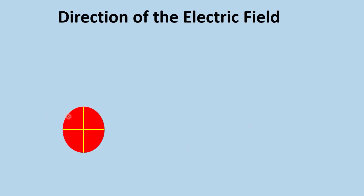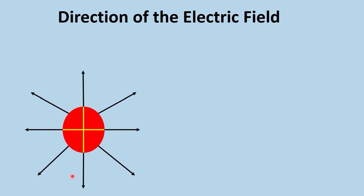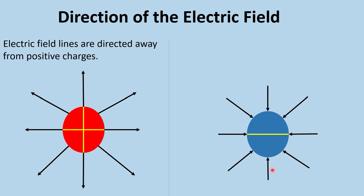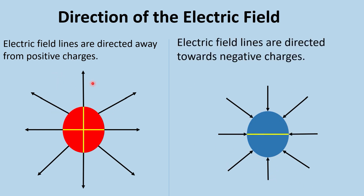So if the source is a positive charge, the electric field points away from it at all points — it diverges away. If the source is a negative charge, the electric field points towards the charge at all points — it converges into the charge.